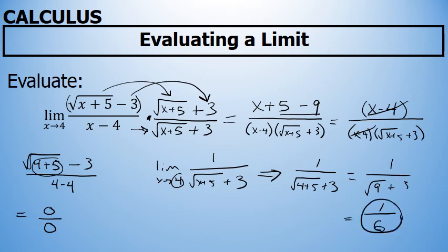The limit as x approaches 4 of the square root of x plus 5 minus 3 all over x minus 4 is equal to 1 sixth.